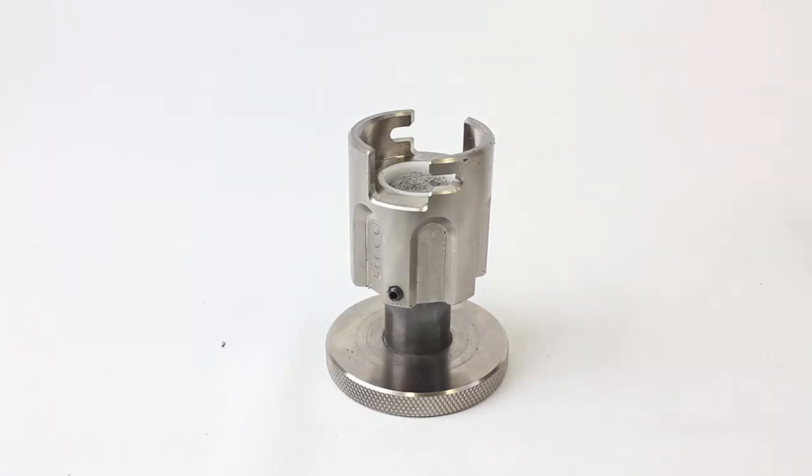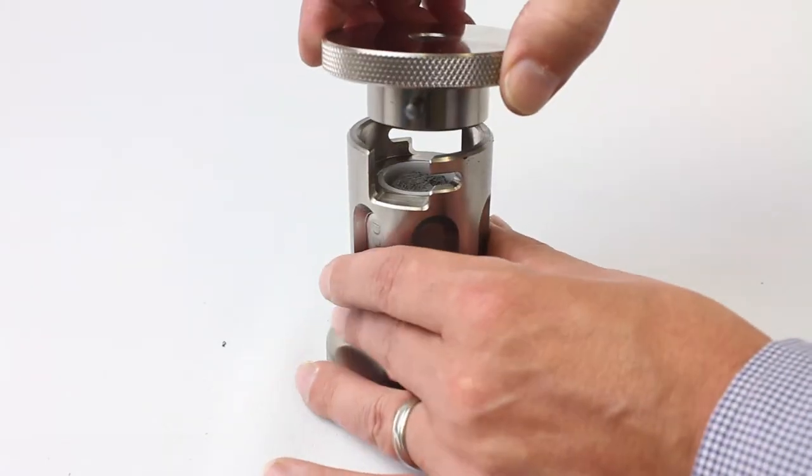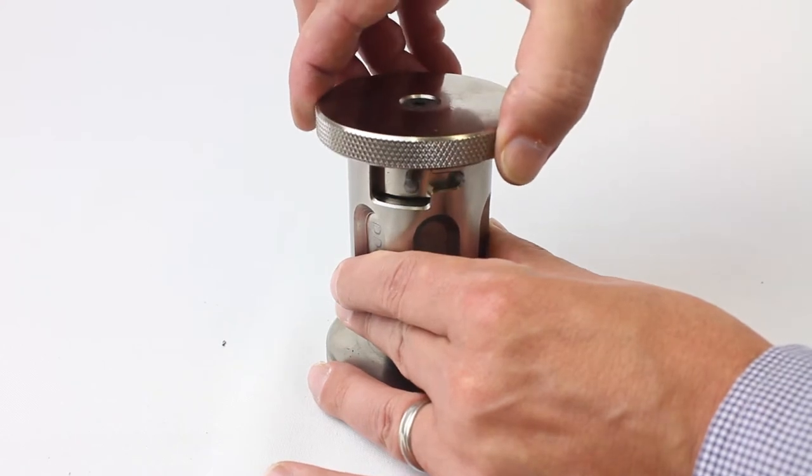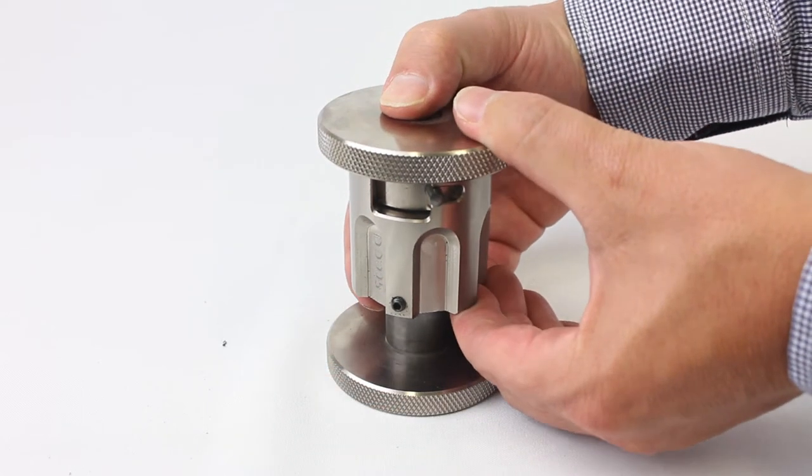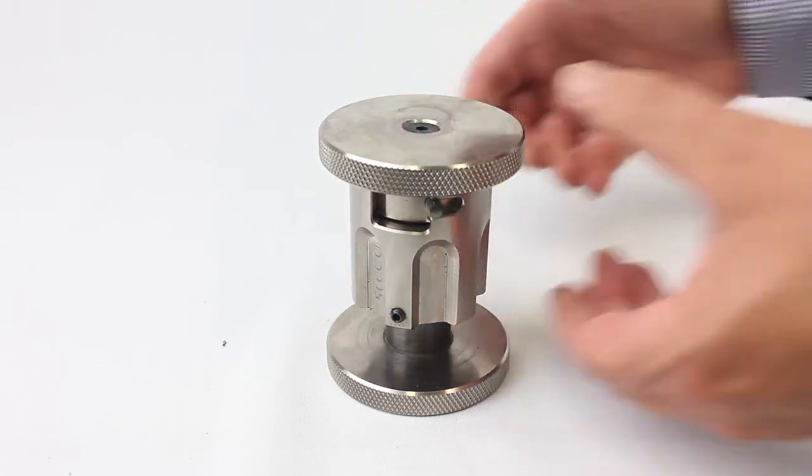Place the lid onto the die and turn to latch the lid. Only turn so that the pin is engaged in the slot. Do not tighten as the lid can become locked. Do not press down on the die until the lid is in place and latched.